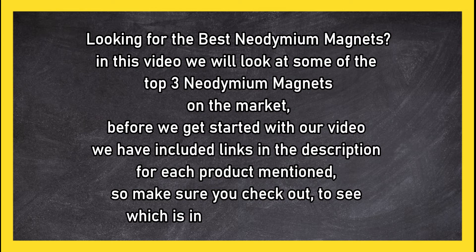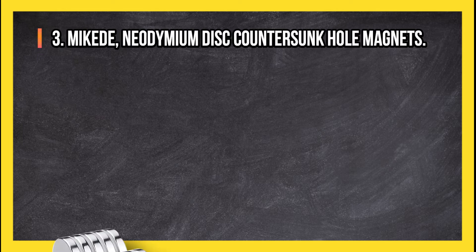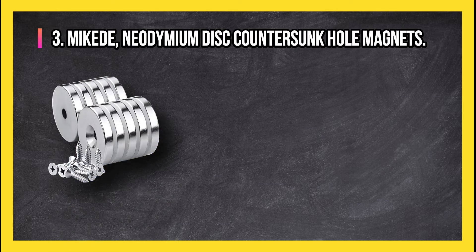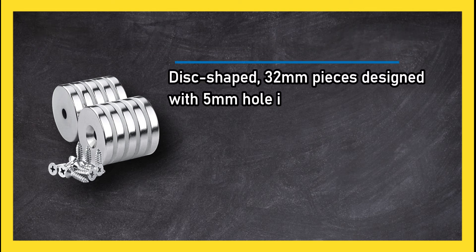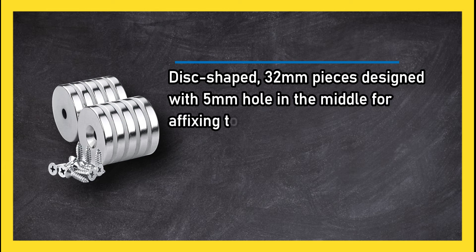Make sure you check out to see which is in your budget range. At number three: Mccade Neodymium Disc Countersunk Hole Magnets. These disc-shaped, 32-millimeter pieces are designed with a 5-millimeter hole in the middle for affixing to surfaces. Screws are included for this purpose.